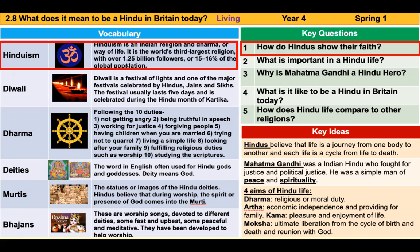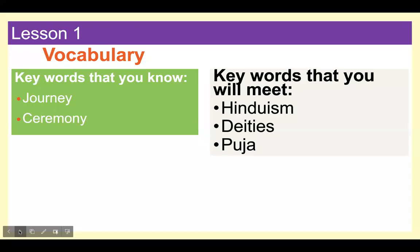Here is our knowledge organiser. When we're thinking about our vocabulary, you can see the red box — we're thinking about Hinduism. Hinduism is an Indian religion, or dharma, which means 'the way of life.' It is the world's third largest religion with over one and a quarter billion followers, which is about fifteen or sixteen percent of the world's population. We're thinking about how Hindus show their faith. Let's go back over our vocabulary — words that you know — and we'll do my turn, your turn.